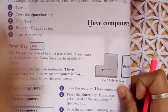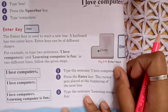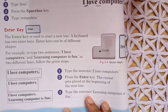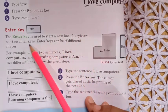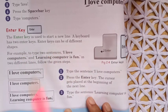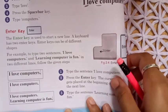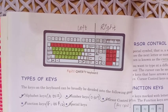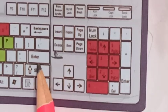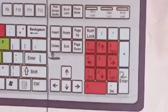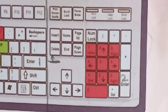The next key is the enter key. The enter key is used to start a new line. A keyboard has two enter keys, which can be of different shapes. One enter key is in the main key area, and the second is in the numeric keypad.